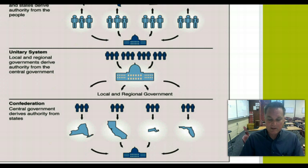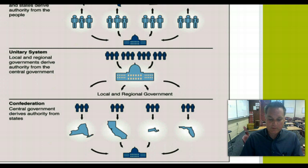The Confederate States of America had a weak central government. The Russian confederation after the break-up of the Soviet Union in 1991 also had a weak central government. A federal system divides the power between a central government and sub-units — the states and local governments.